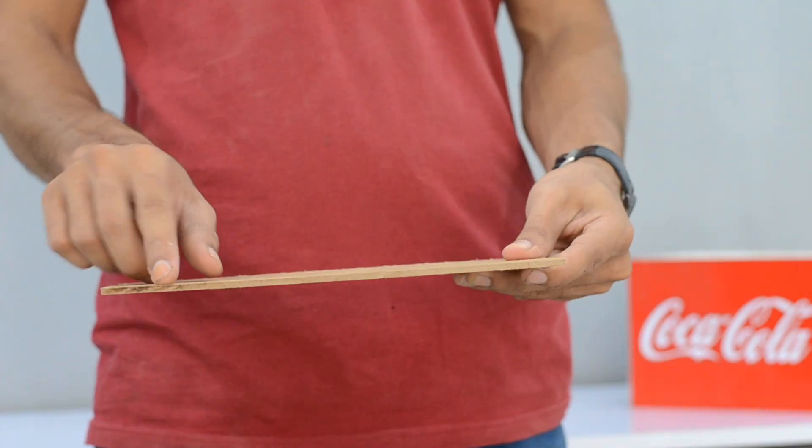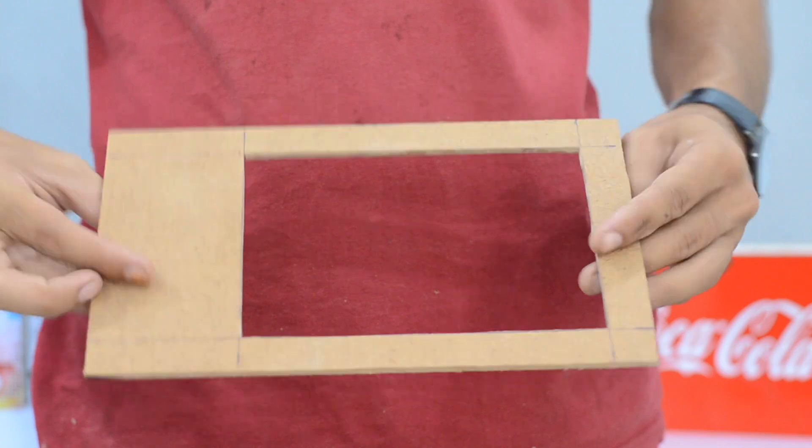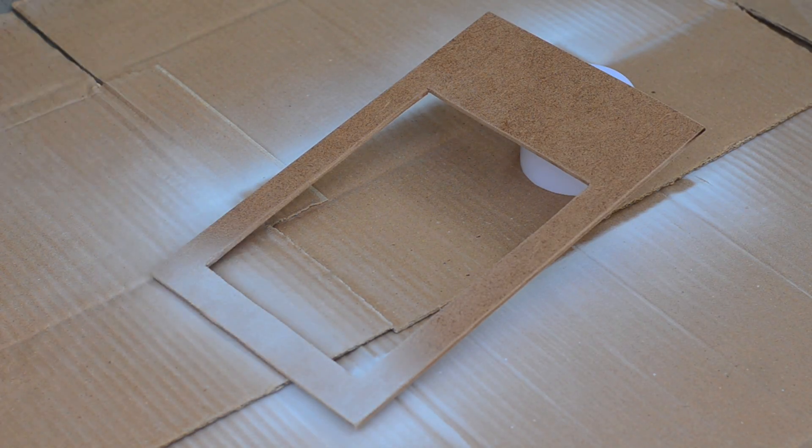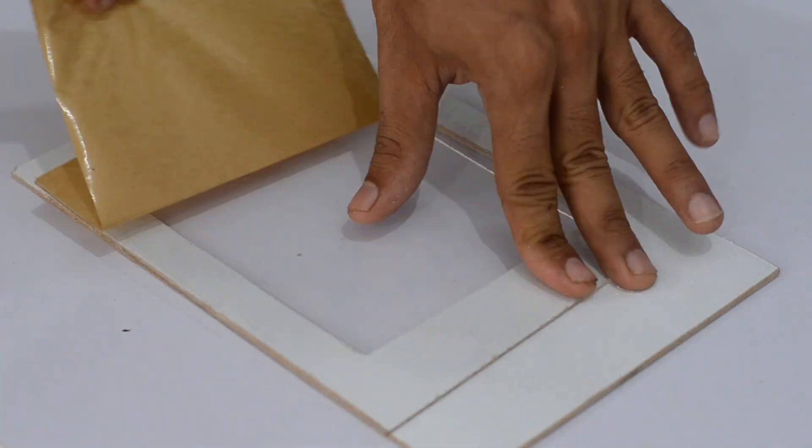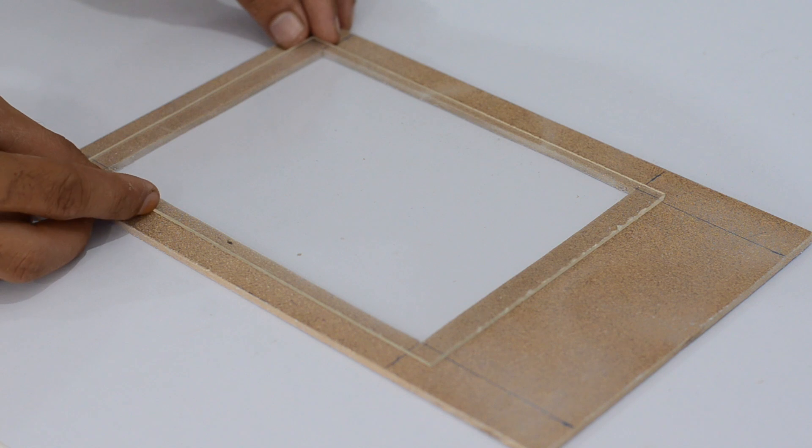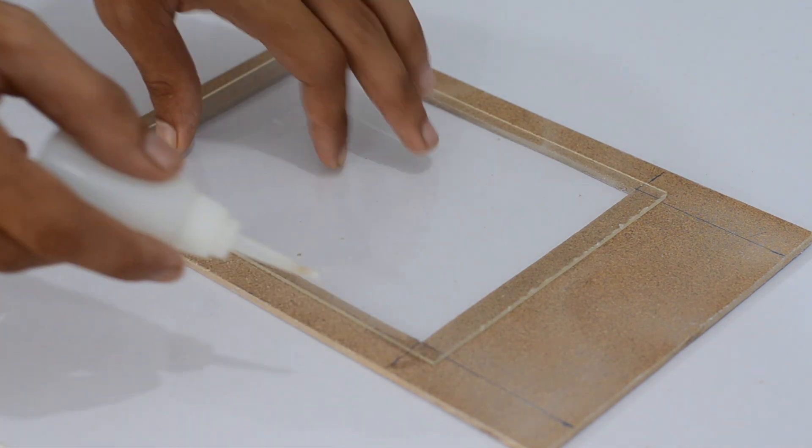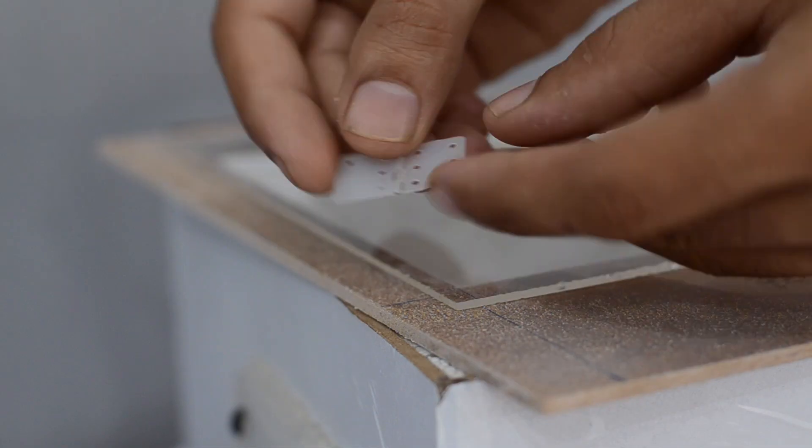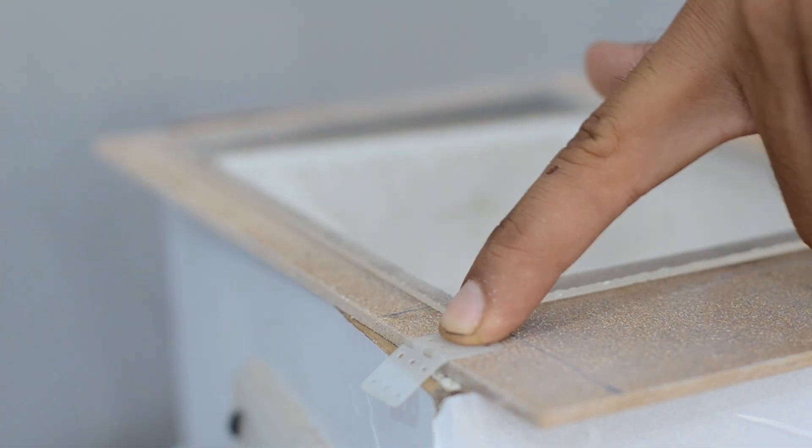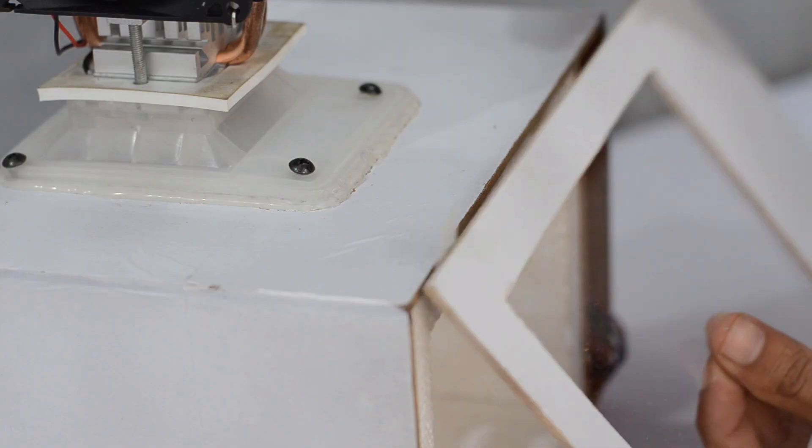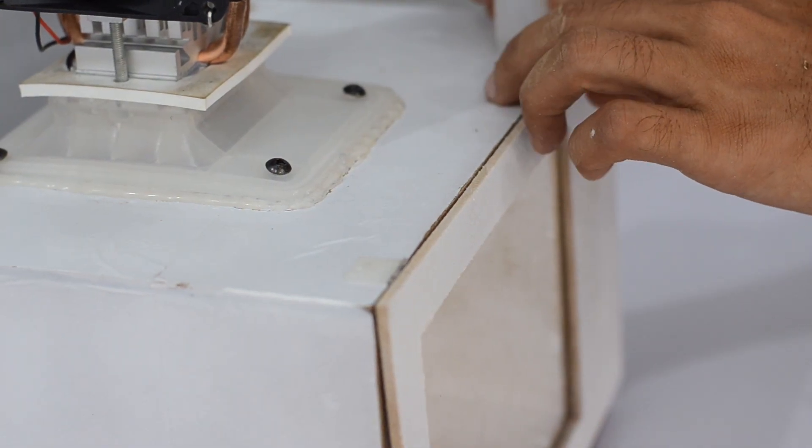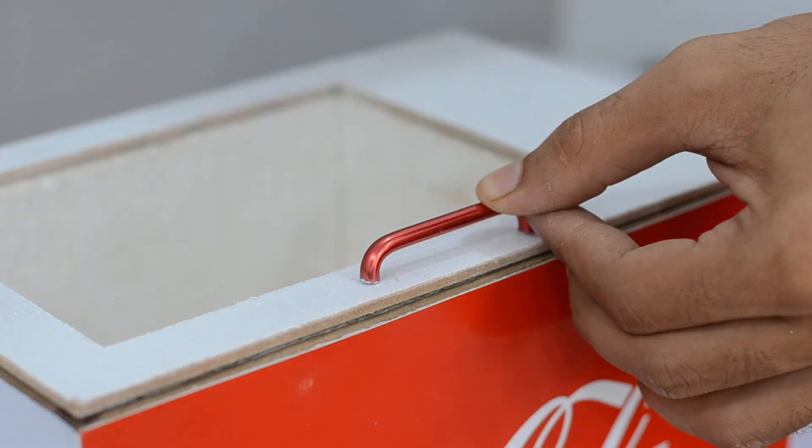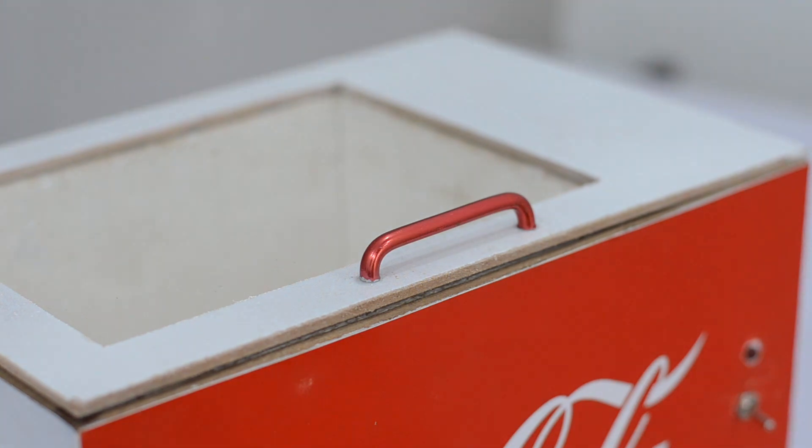The top lid is made out of the same MDF sheet that has been used earlier, and a plexiglass sheet is glued in the center to make it look much more attractive. The lid is then connected to the enclosure using plastic hinges glued to both sides. A handle is then glued to the lid and I have used a lithium polymer battery to power this fridge.